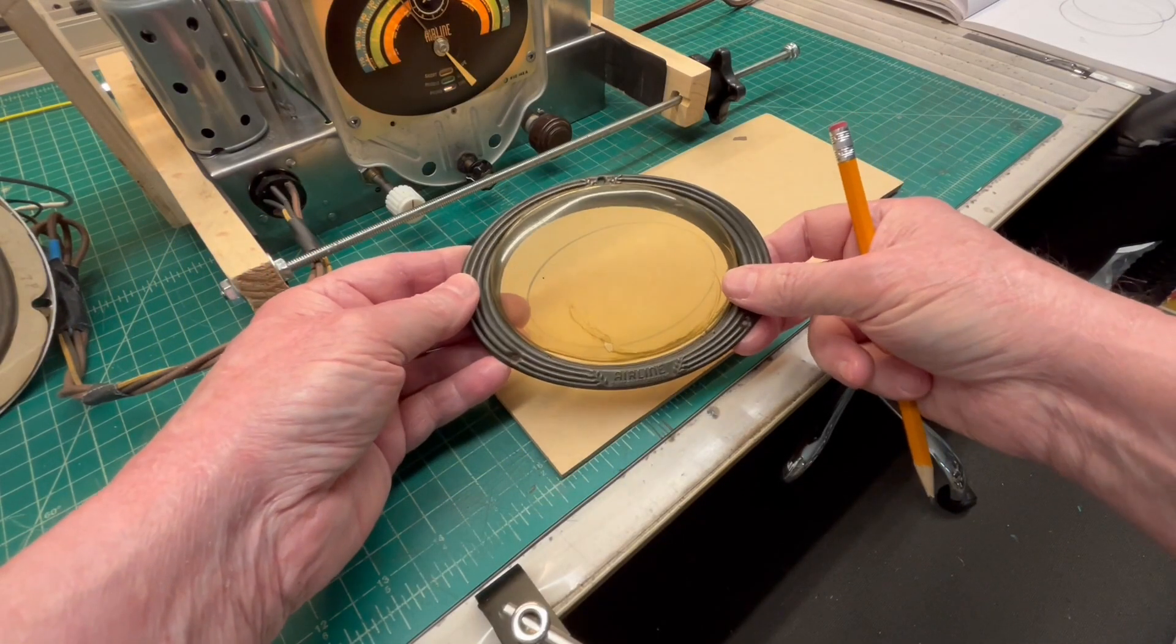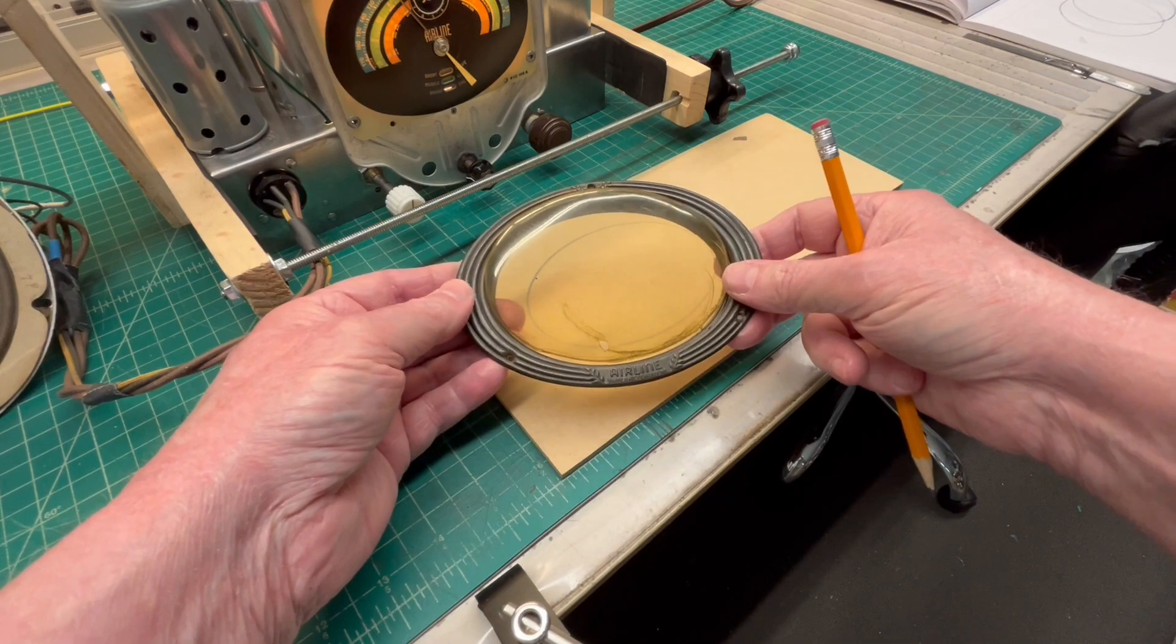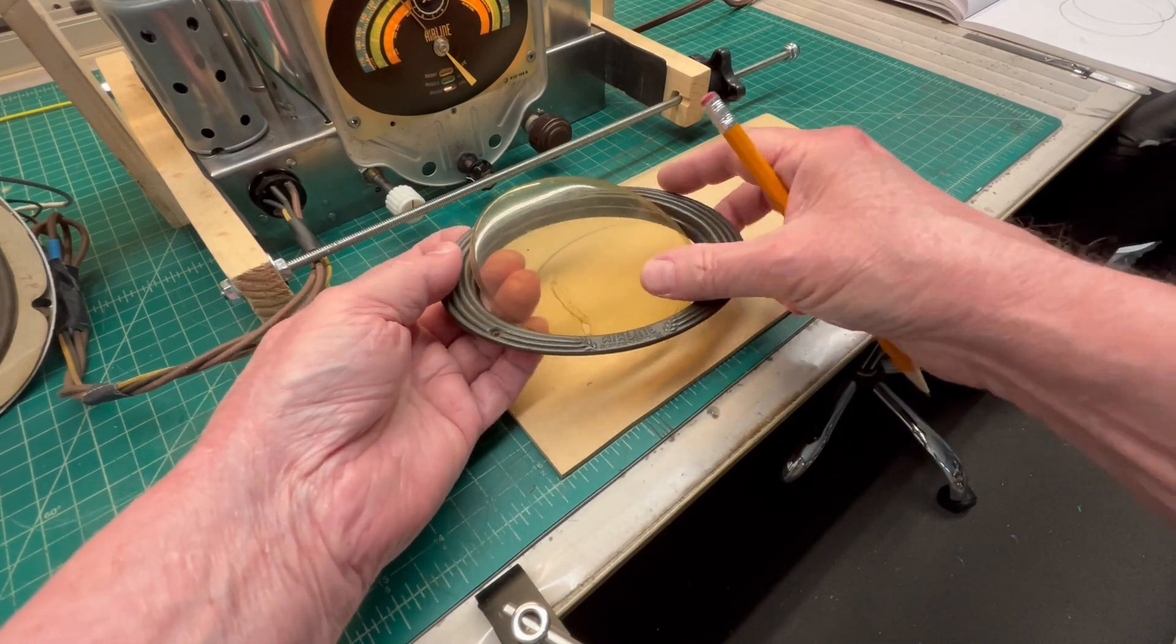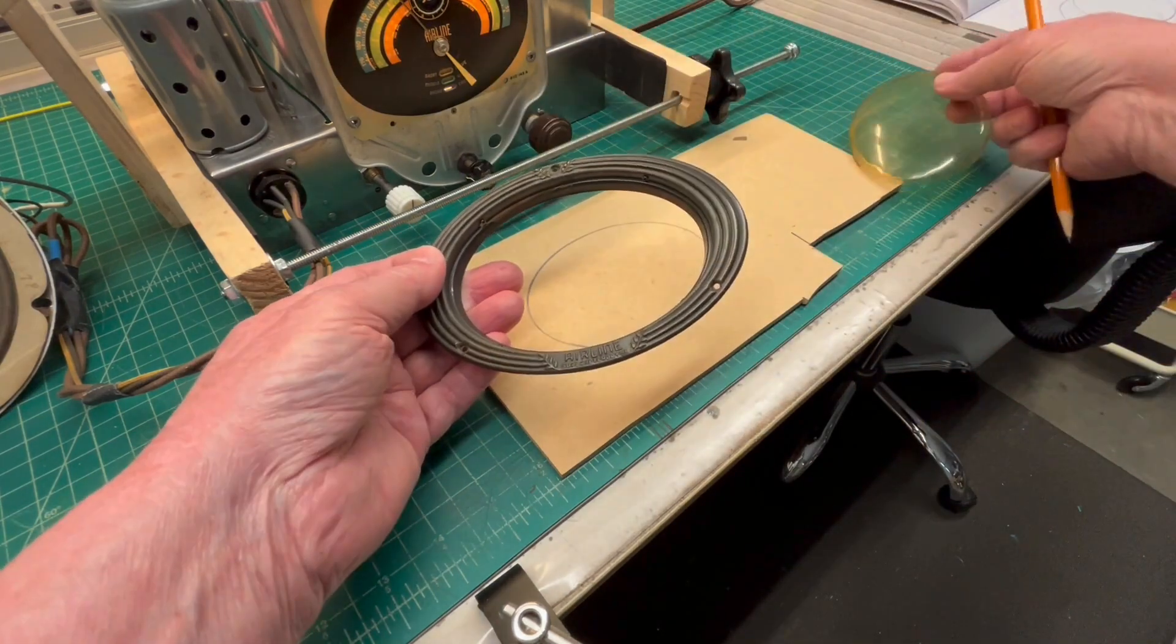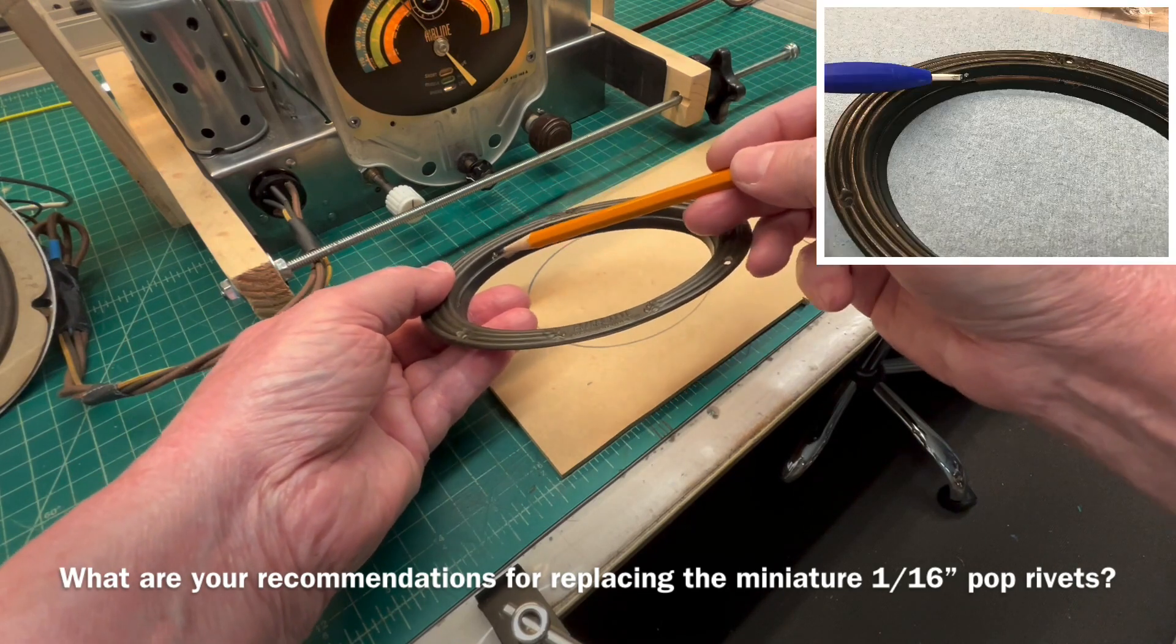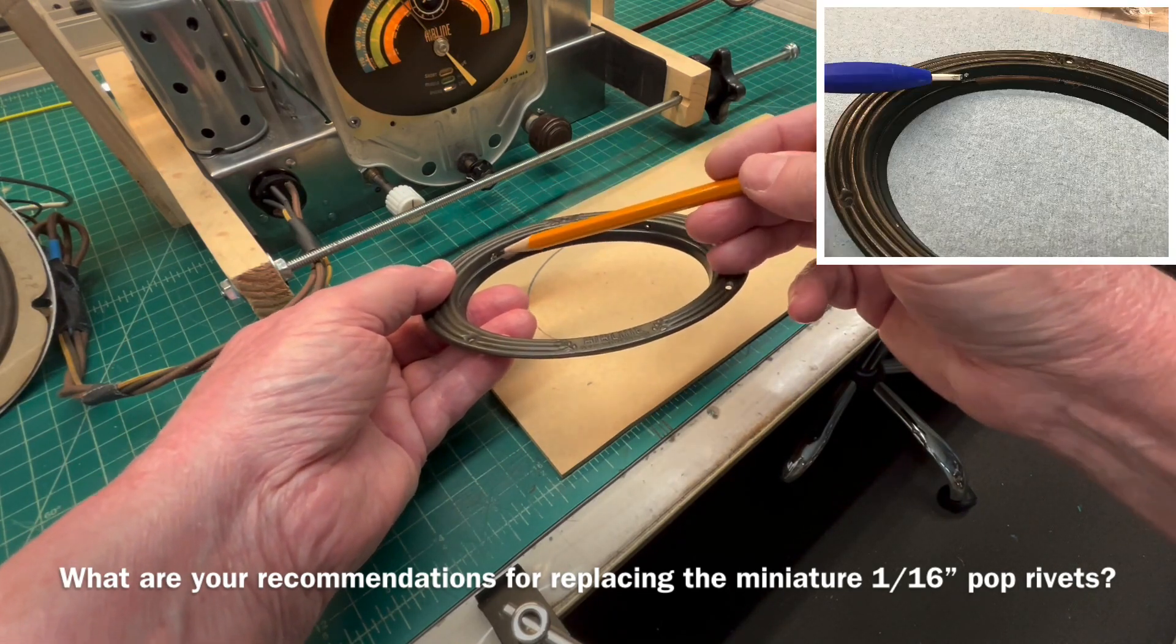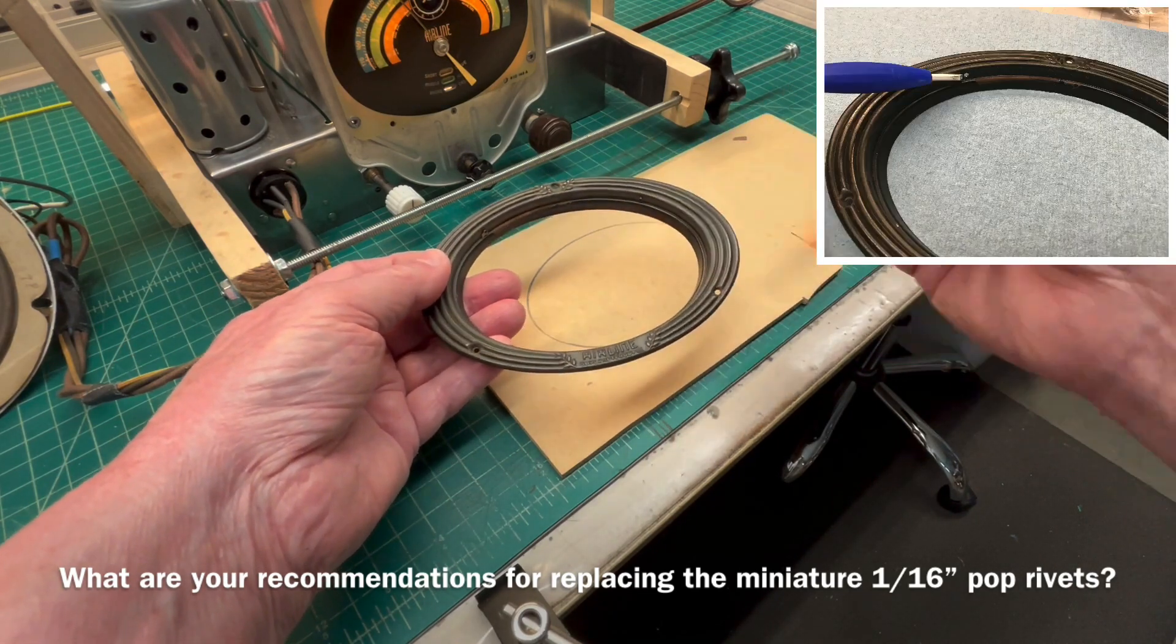You can see the old dial cover on the airline 62 316s has had better days. I was able to pop it out here. It was held in place with some very small pop rivets at the 10, 2, 4 and 8 o'clock positions.